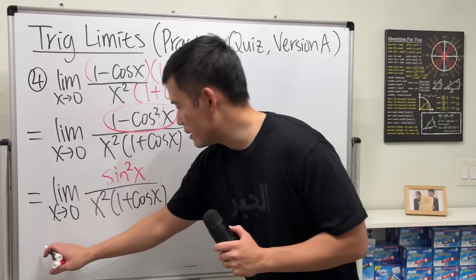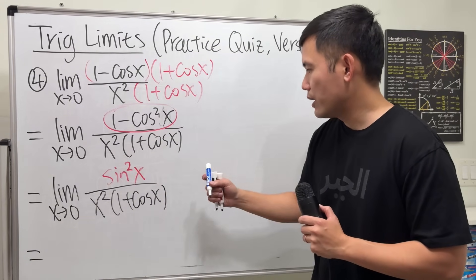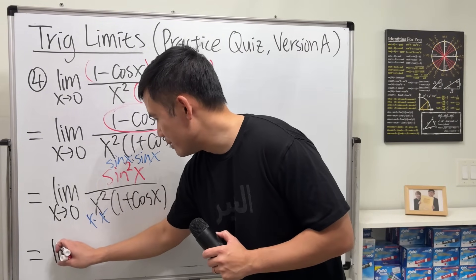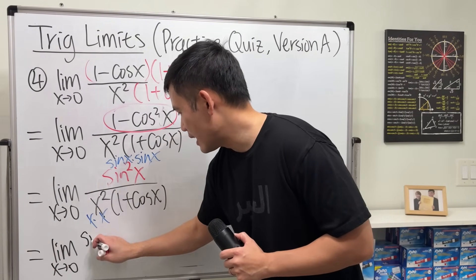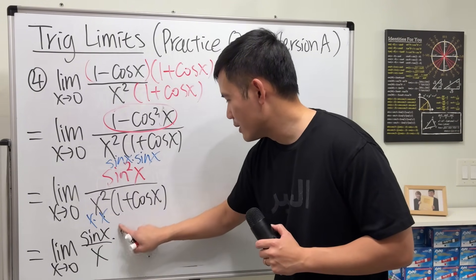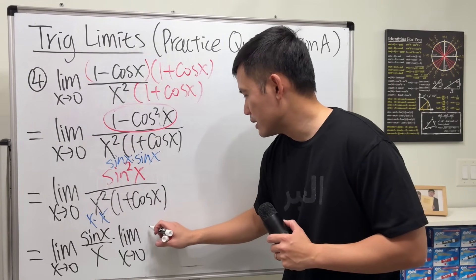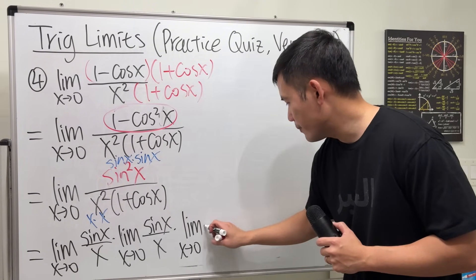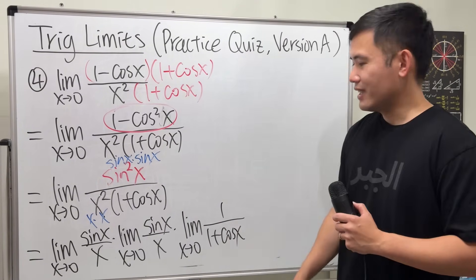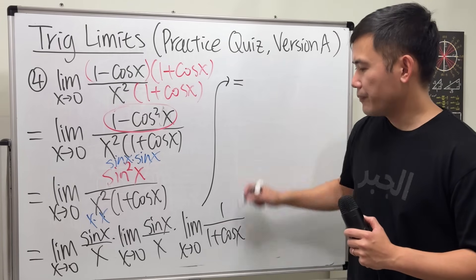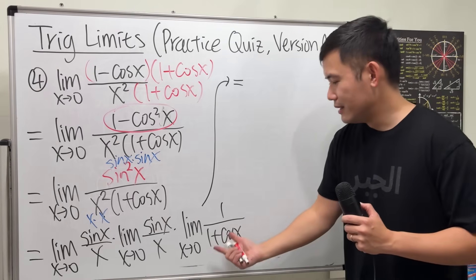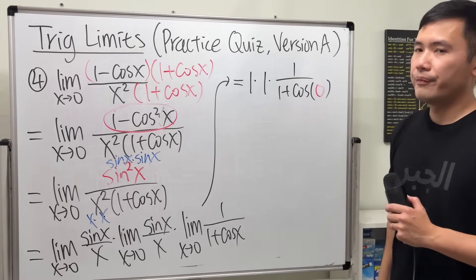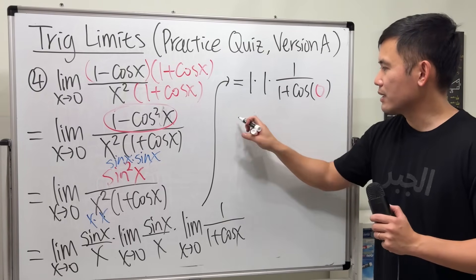Pair sine x over x with sine x over x, applying the fundamental limit twice, and keep 1 over (1 plus cosine x) separately. Each sine x over x limit gives 1. For the last part, plug in 0: 1 over (1 plus cosine 0). Cosine 0 is 1, so 1 plus 1 is 2. The final answer is 1 over 2, or one half.